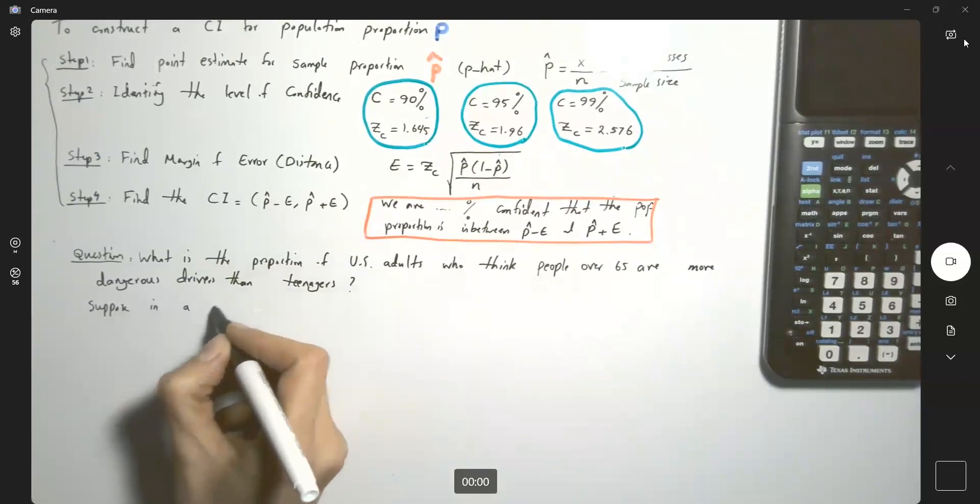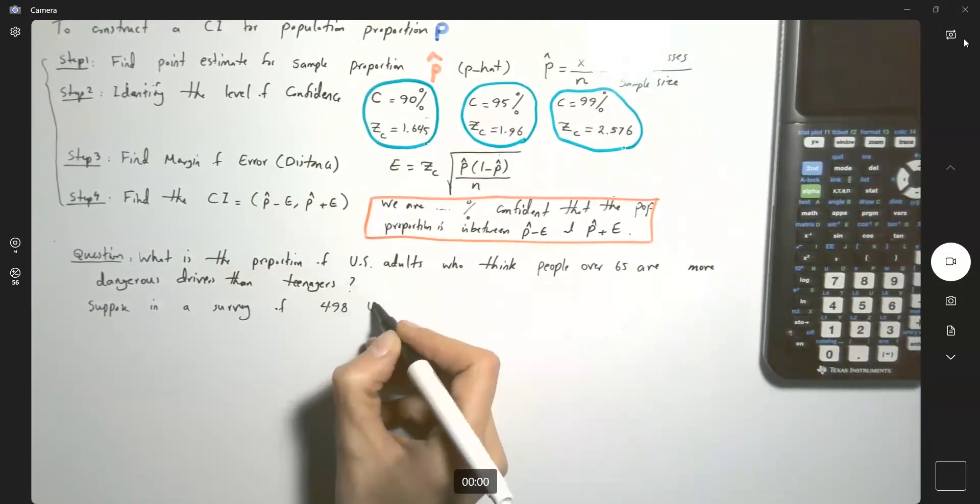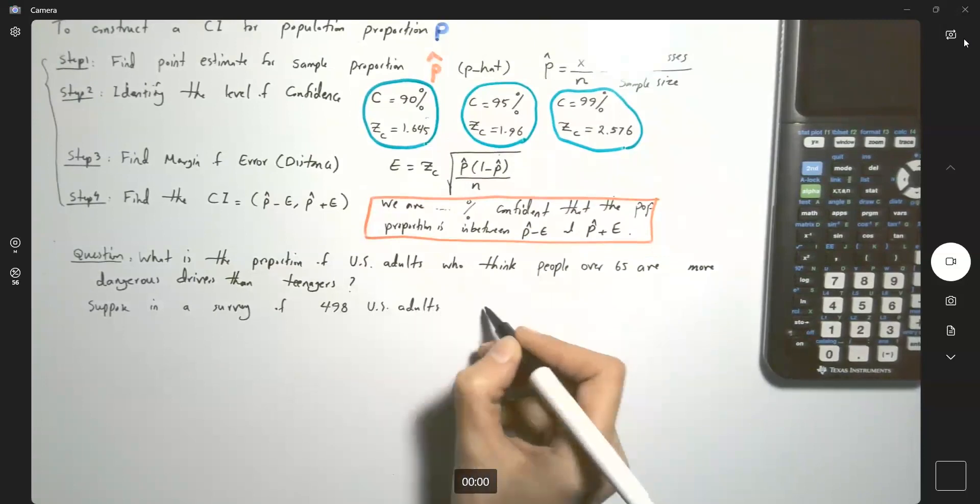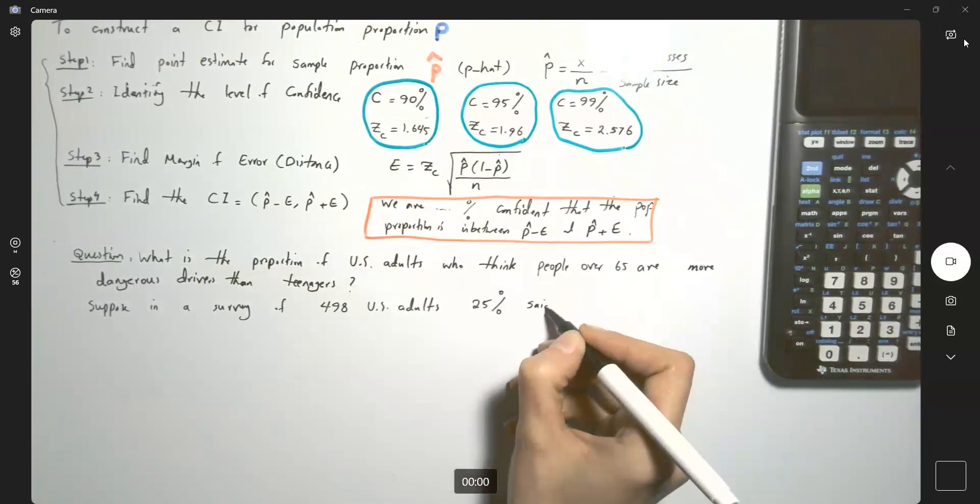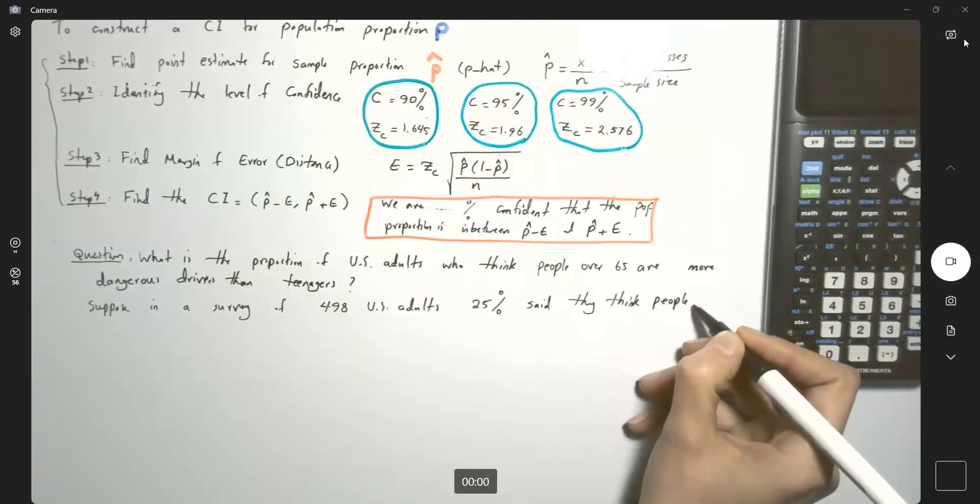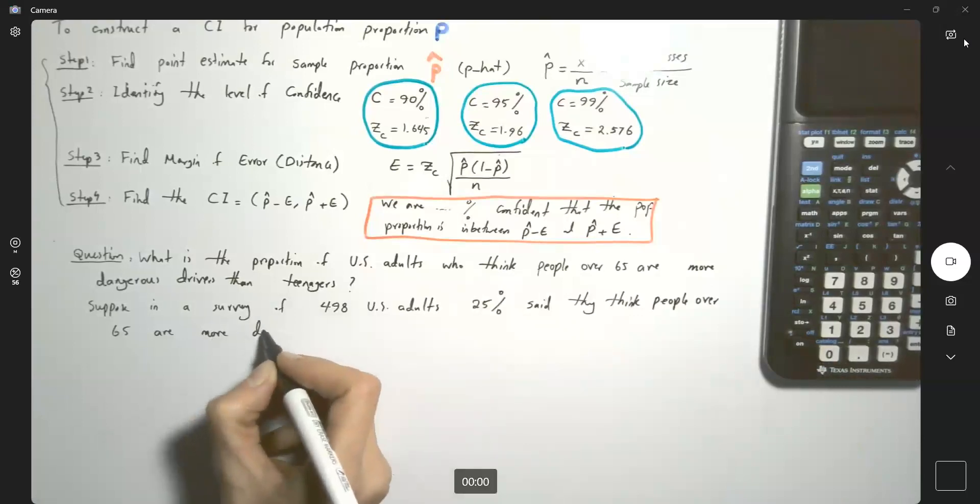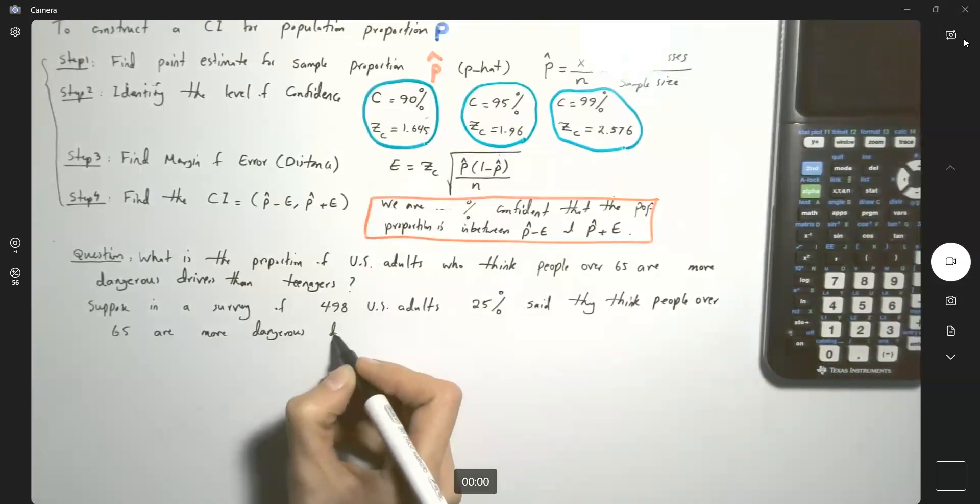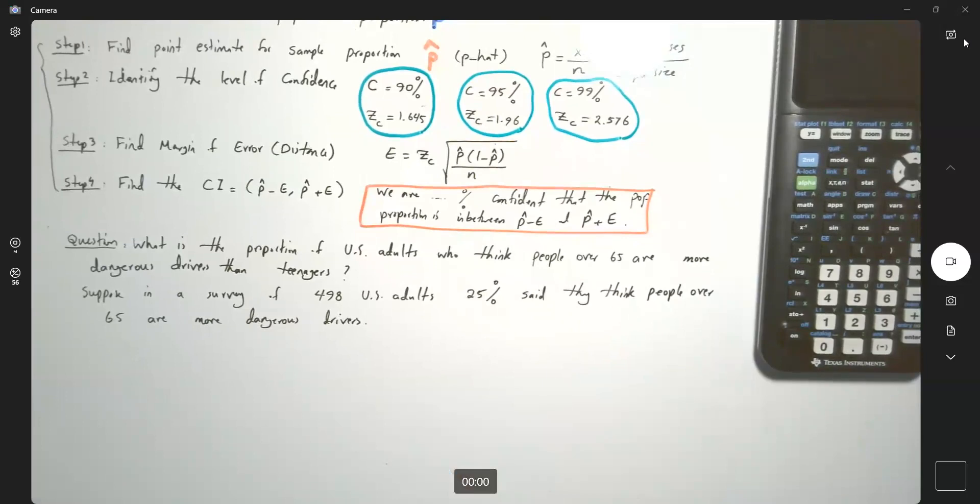Suppose in a random survey of 498 U.S. adults, 25 percent said they think people over 65 are more dangerous drivers. But what is the true population proportion? It just belongs to this random sample.